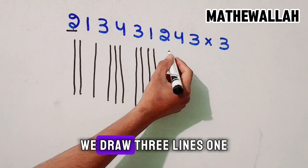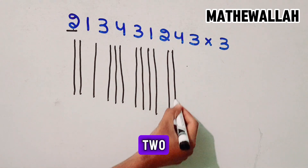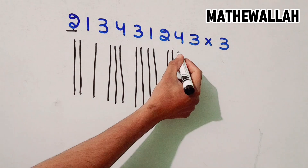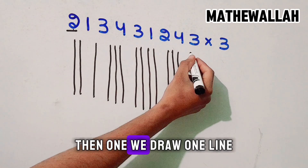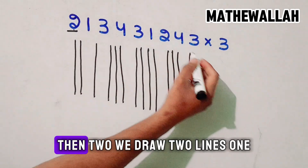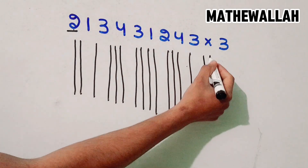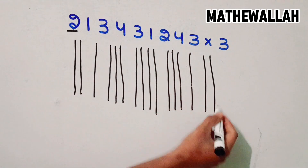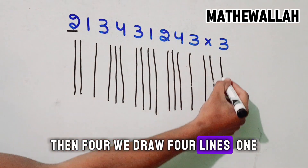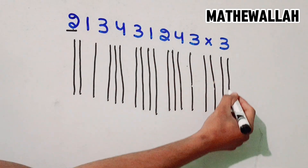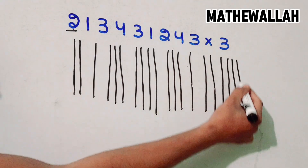Then 3 — we draw 3 lines: 1, 2, 3. Then 1 — we draw 1 line. Then 2 — we draw 2 lines: 1, 2. Then 4 — we draw 4 lines: 1, 2, 3, 4.